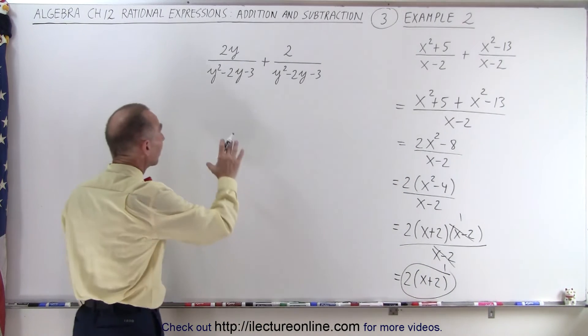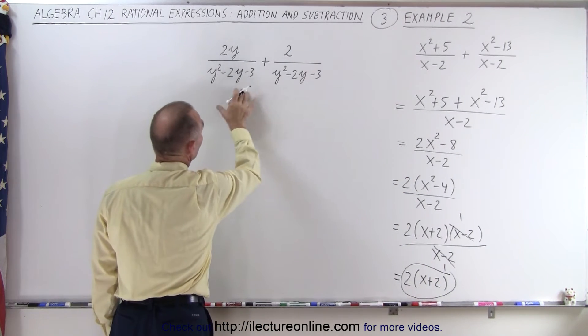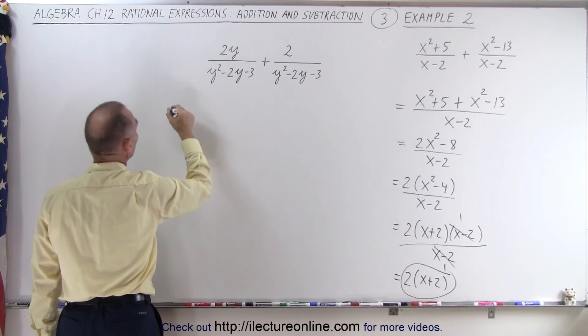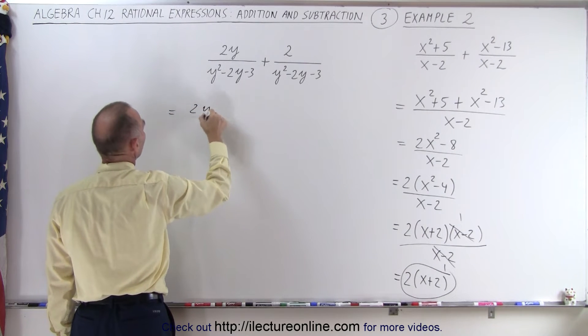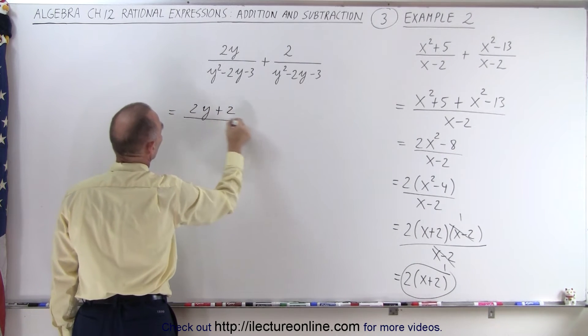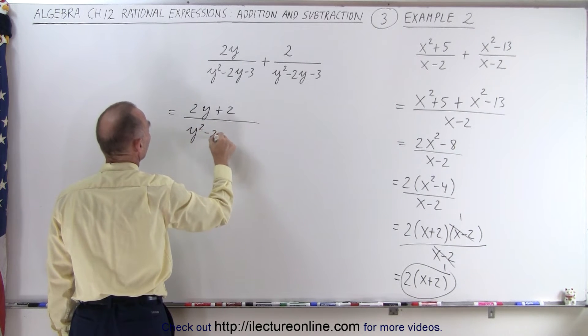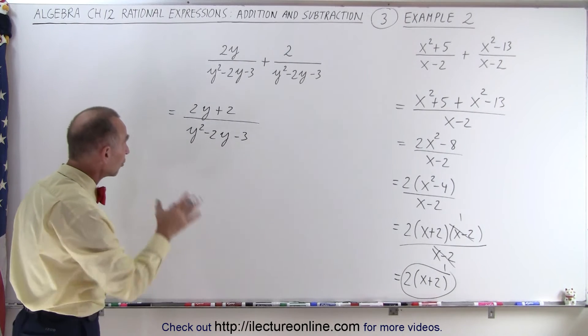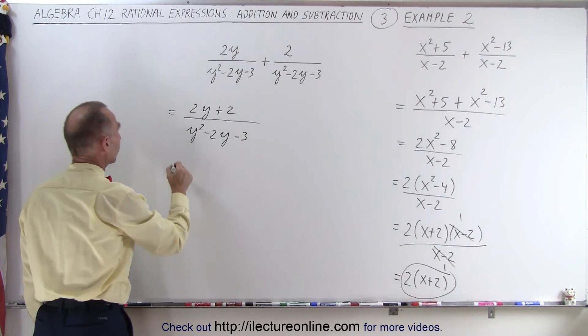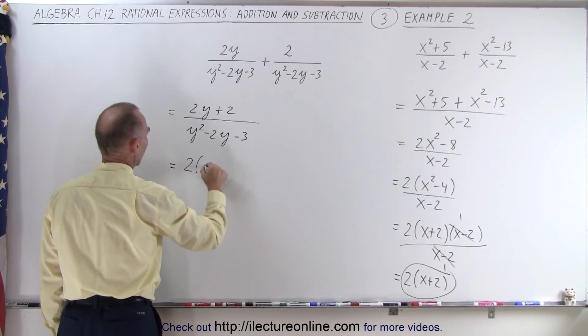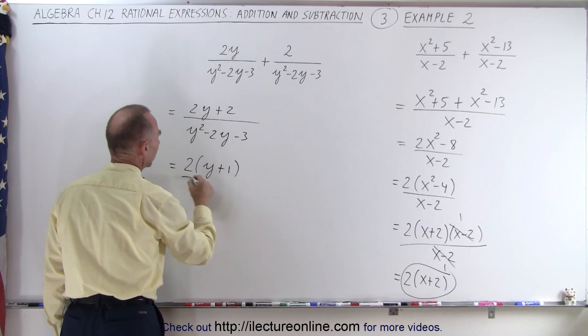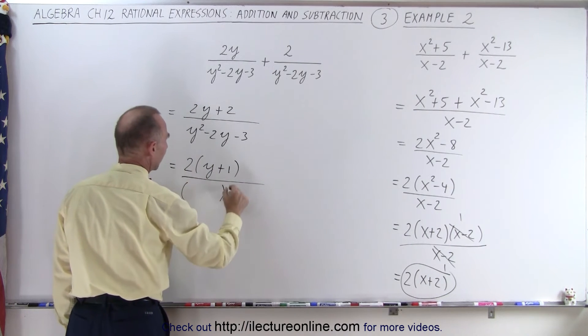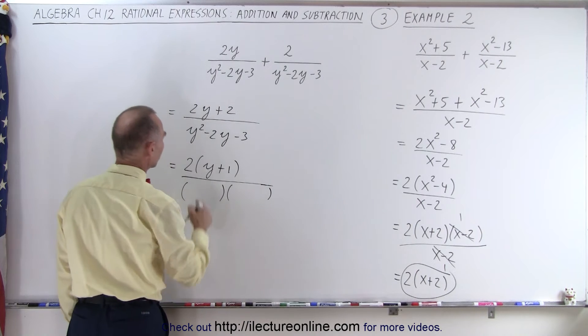Same with the one on the left. Again, we see that the denominators are the same, so we can simply add the two numerators. So this becomes 2y plus 2 over the same common denominator of y squared minus 2y minus 3. And then we can factor the numerator and the denominator. So this would be equal to 2 times y plus 1 in the numerator. And in the denominator we're going to have a product of two binomials.